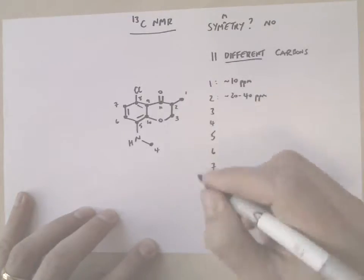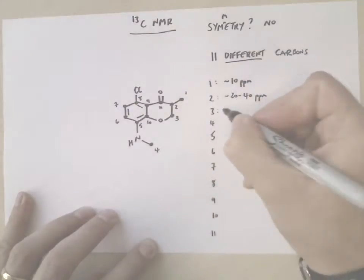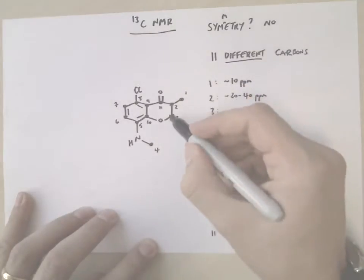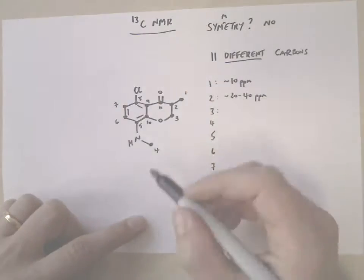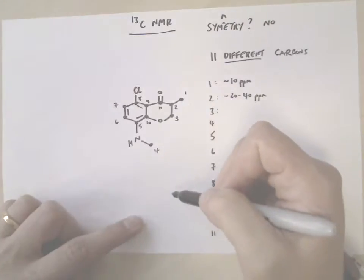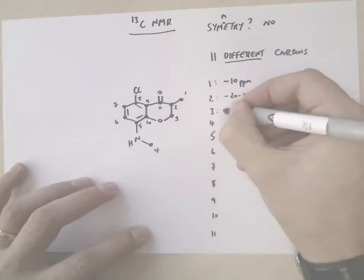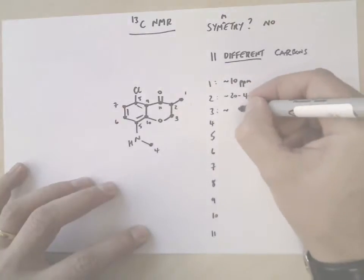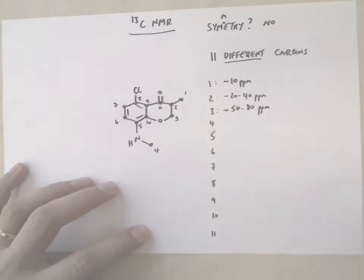Now, carbon 3, it's further away from that carbonyl, but notice it's directly attached to oxygen. So that oxygen withdraws the electrons away from carbon and it has a much greater effect on where it comes in the spectrum. And if you look at your charts, you'll see that it comes between 50 and 80 ppm.